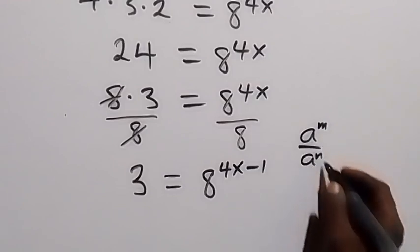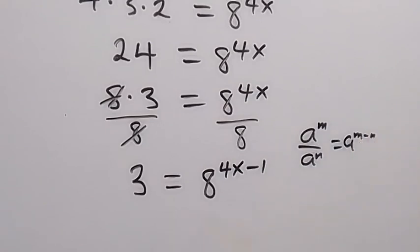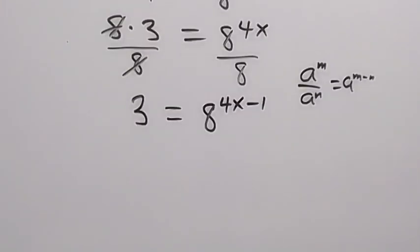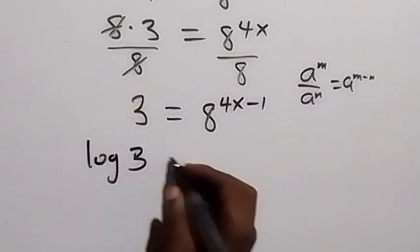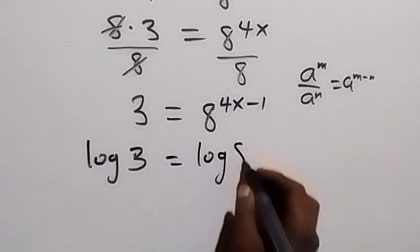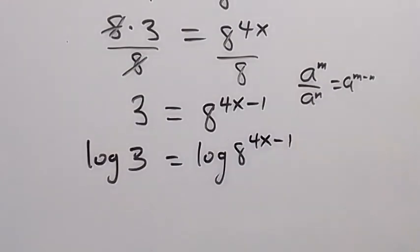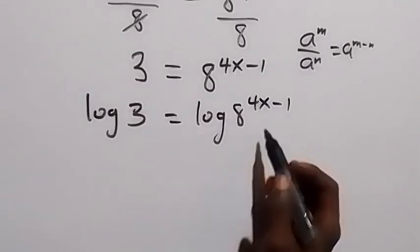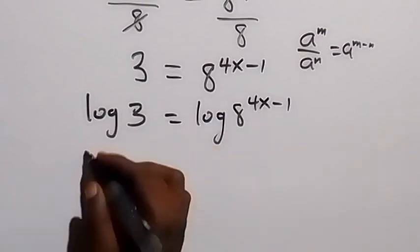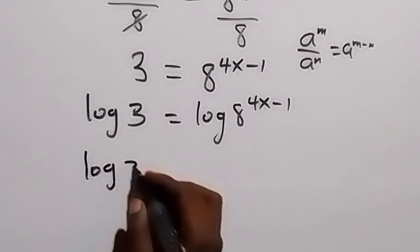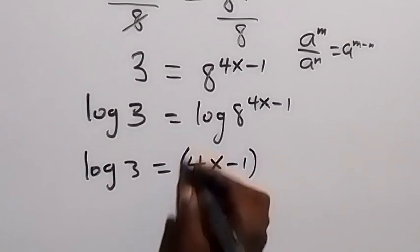That is, when we have a raised to power m divided by a raised to power n, this is the same as a raised to power m minus n. Applying that, we then take the log on both sides: log 3 equals log of 8 raised to power 4x minus 1. Applying the power law of logarithms, we bring the power down: log 3 equals 4x minus 1 times log 8.